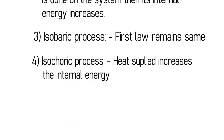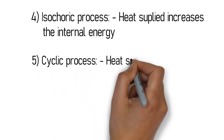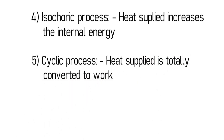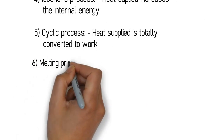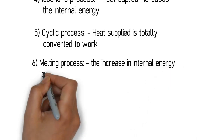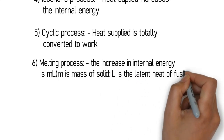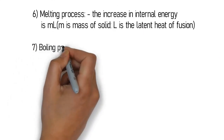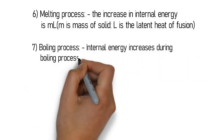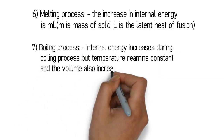Application three: isobaric process — pressure remains constant, so work done W = P·dV is always present and the first law remains the same. Isochoric process: volume is constant, so work done is zero and Q = ΔU. Cyclic process: internal energy does not change after returning to the initial state, so the first law gives Q = W.